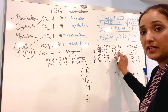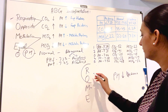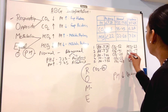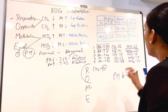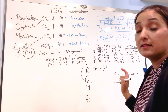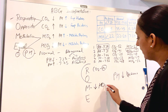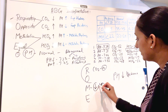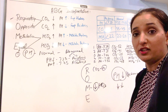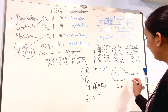Next is carbon dioxide: carbon dioxide is 41 — it is normal. Then find bicarb: bicarb is 17. Is bicarb normal or abnormal? It's abnormal — bicarb should be between 22 to 26, but it's less. So bicarb is going down. Bicarb is going down, pH is going down — both are going in the same direction, equal direction. That means this is metabolic acidosis.